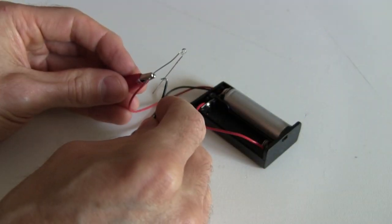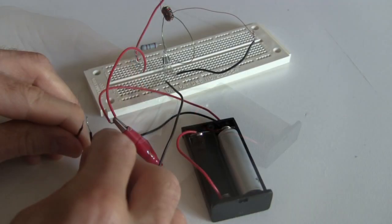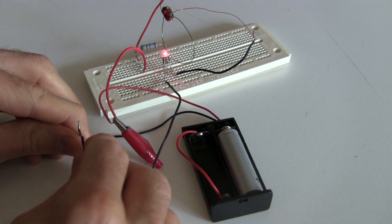For example, this LED won't run off this battery. But if I first run the power through this Joule Thief circuit, then the LED lights up.